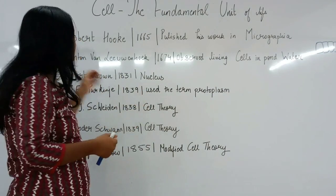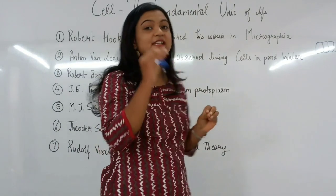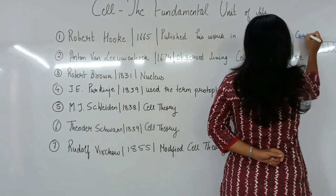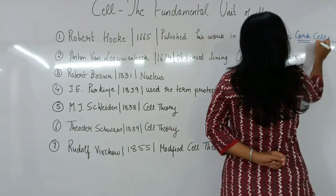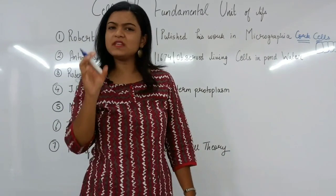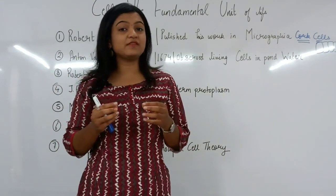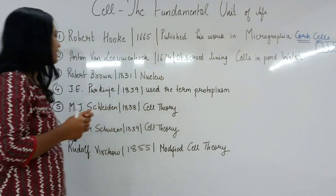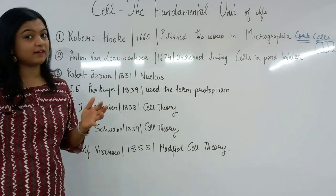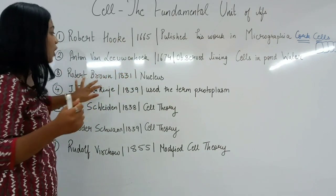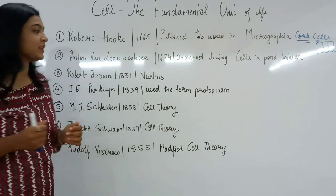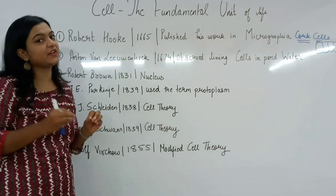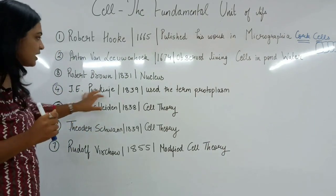The next advancement was that Anton von Leeuwenhoek observed living cells for the very first time, because Robert Hooke had observed dead cells — he observed cork cells, which are found in the bark of a tree and were pretty much dead. Anton von Leeuwenhoek did this in the year 1674, observing living cells in pond water. Then, Robert Brown in the year 1831 discovered the nucleus. Following that, the term 'protoplasm' was first used by J.E. Purkinje in 1839 for the living matter of the cell.